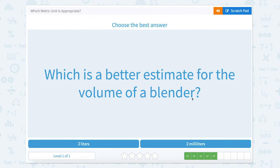What is the better estimate for the volume of a blender? A blender is two milliliters. So two little droplets or about the size of that soda pop can or the bottle rather than a can sounds more accurate for the volume of a blender.